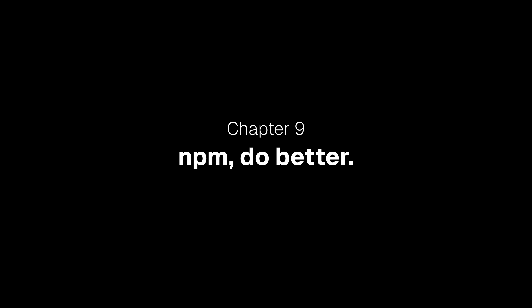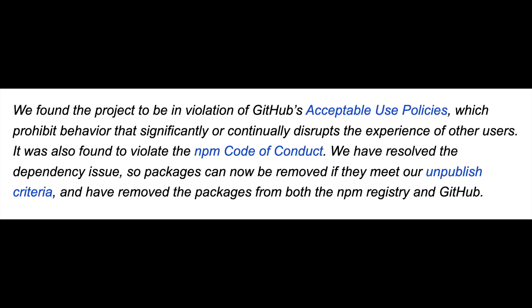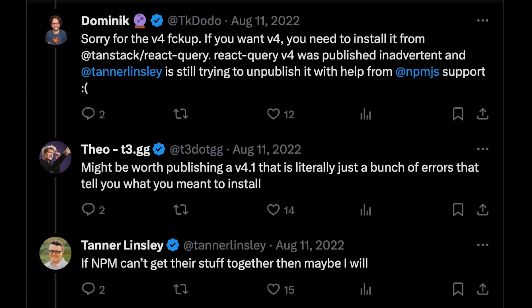Chapter 9: NPM, do better. I actually reached out to NPM for comment, specifically asking if the issues around version star were fixed. Their response: 'We found the projects to be in violation of GitHub's acceptable use policies, which prohibit behavior that significantly or continually disrupts the experiences of other users. It was also found to violate the code of conduct. We have resolved the dependency issues, so packages can now be removed if they meet our unpublish criteria. We've removed the package from both the NPM registry and from GitHub.' At this point in time, NPM doesn't seem to believe there is an issue here. But this isn't the first time I've seen it. One of my favorite packages, React Query, was affected by this all the way back in 2022. Since React Query is really popular, they have a lot of packages that depend on them, many of which just blindly depend on version star.